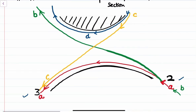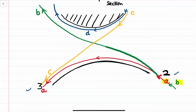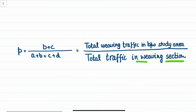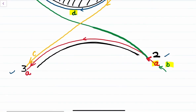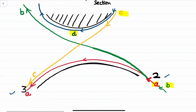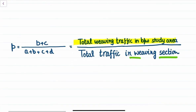So we have alphabets A, B, C, and D that represent the overall movement of traffic in between the section. The weaving ratio is defined as the total weaving traffic — the traffic crossing each other — in between the study area. Traffic B and C are what are crossing each other, so the total weaving traffic will be B plus C, and the total traffic in the study section is A plus B plus C plus D.